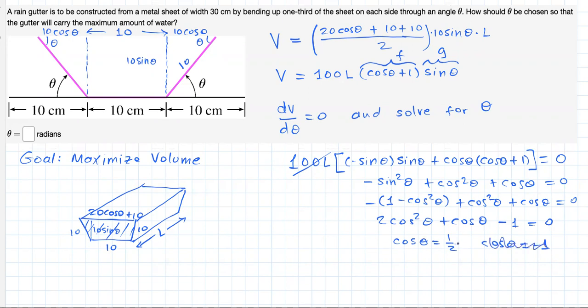However, we keep this solution. Cosine of theta equals one half will lead to theta being equal to the angle whose cosine is one half between 0 and pi over 2. That is pi over 3 radians, or 60 degrees. Serious candidate to maximize this volume.